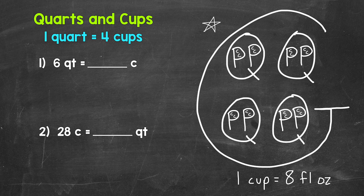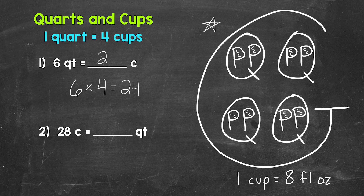Well, each quart equals four cups. So we have four cups for each of the six quarts — we need to do six times four. That's how we convert from quarts to cups: we multiply by four. Six times four gives us 24, so six quarts equals 24 cups.